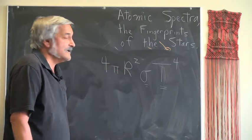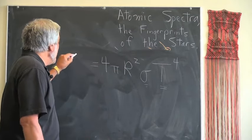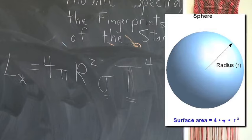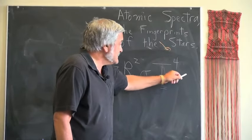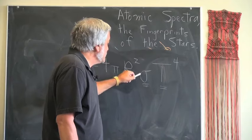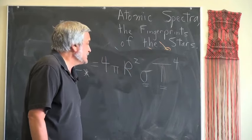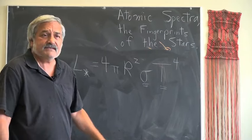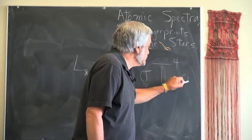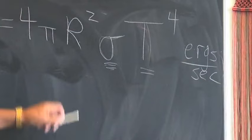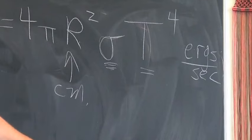Now remember that our black body spectrum was the energy output for each surface area element of the object. Well, in order to find out the total, we must take our expression here and multiply by the whole surface of the star, where r is the radius of our star. That is the luminosity or total energy output of any black body radiator that is spherical in shape.